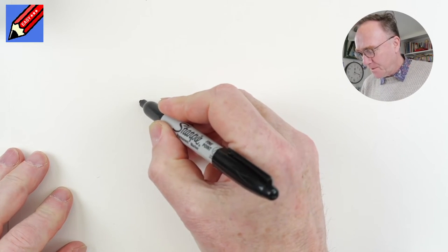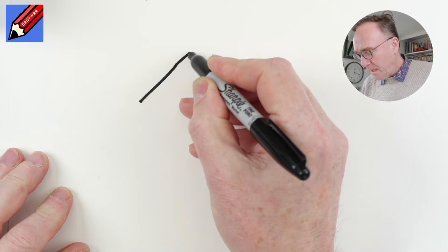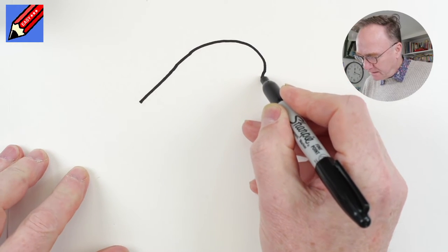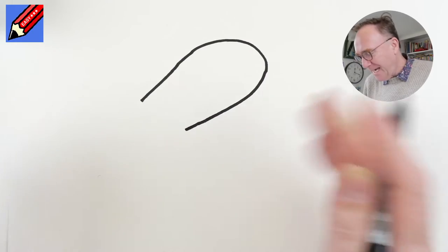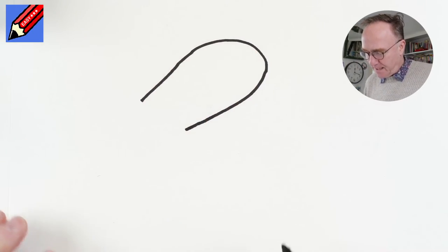So pick a point and then you want to go straight and then you want to go around and then you want to come back straight but coming in at an angle a little bit like that.